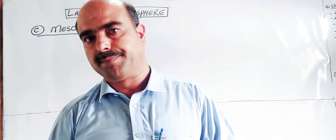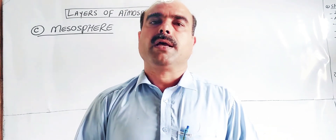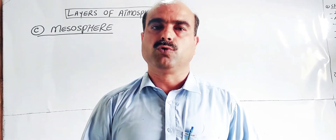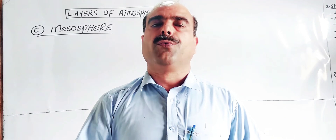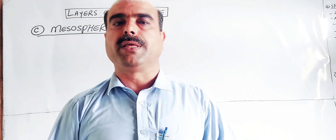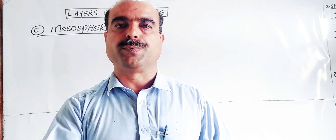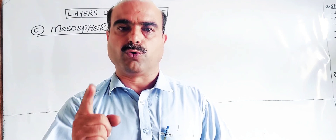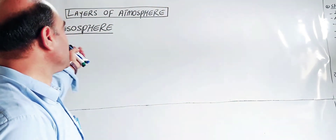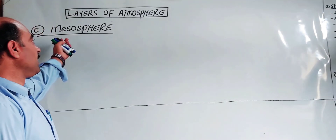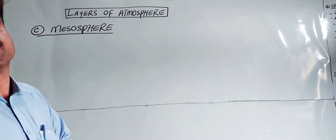In my previous videos I have uploaded and discussed the atmosphere layers. The atmosphere has four layers. The first one, troposphere, was discussed in a previous video. The second one, stratosphere and ozonosphere, was also discussed. Now the third layer is what we are going to discuss today along with its characteristics.